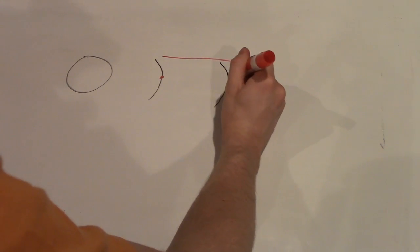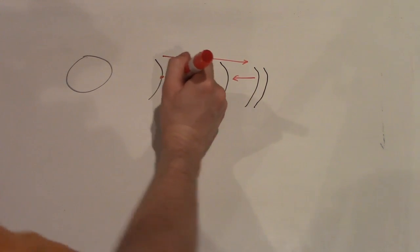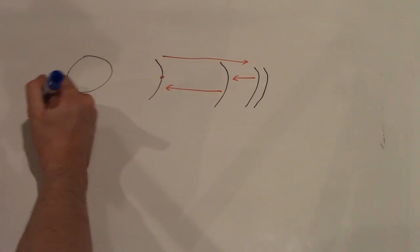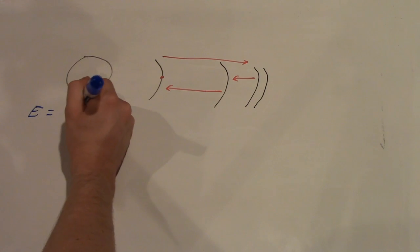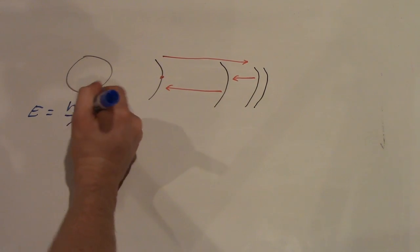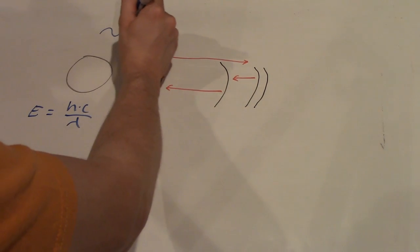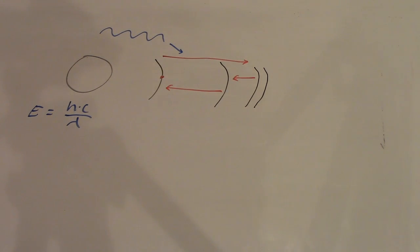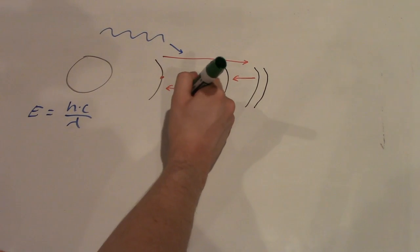When an electron drops to this intermediate energy level, less energy is released, and, as shown by the photon energy equation, a longer wavelength is released, producing a different type of light. So, say an atom absorbs light of very short wavelength, such as an X-ray, then, in each of the intermediate drops of the electron, it will emit light of longer wavelength, such as visible light.